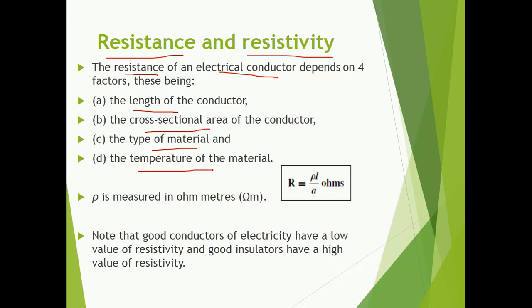The relationship is that R is equal to rho L by A, where R is the resistance of the conductor, rho is the resistivity, L is the length, and A is the area. The unit of rho, which is resistivity, is ohm meter.